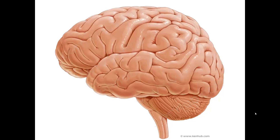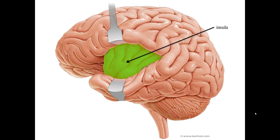The insula is found deep within the lateral sulcus when the frontal, parietal, and temporal lobes are all pulled away from each other.